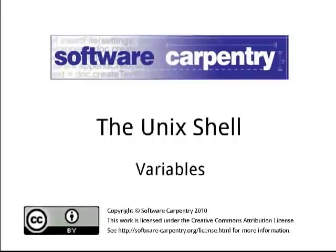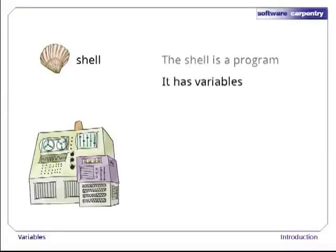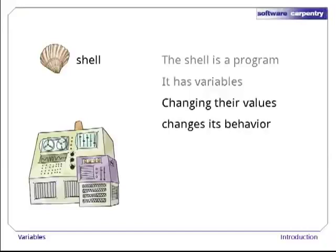Hello and welcome to episode number 8 of the Software Carpentry Lecture on the Unix Shell. In this episode, we'll have a look at shell variables. As you've heard several times by now, we're looking at how to interact with a computer using a command line shell. The shell is just a program, and like other programs, it has variables. Those variables control its execution, and by changing their values, you can change how the shell and other programs behave.